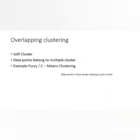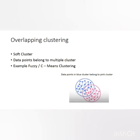Overlapping clustering is also called soft clustering, where data points can belong to multiple clusters. An example of overlapping clustering is C-means clustering, also known as fuzzy clustering. In this type, some data points in the blue cluster also belong to the pink cluster, because those data points share features related to both clusters.